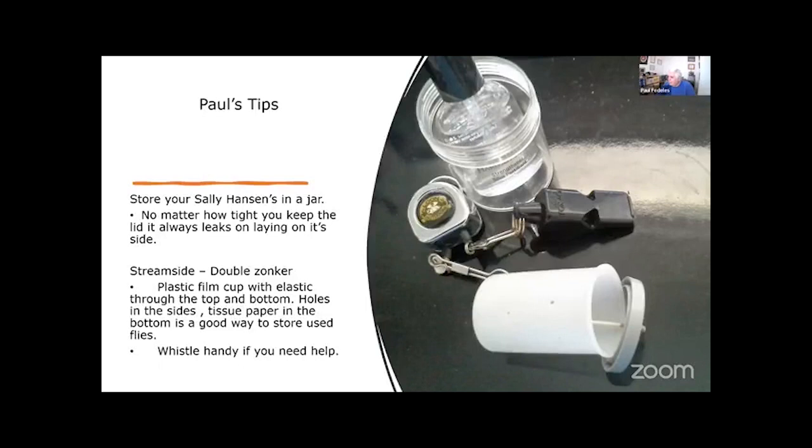My tips, okay? Sally Hansen's – no matter how I do it, if you tighten the leg, it leaks, so I put it in a cup. And the other thing is a double zunker. I got the film caps. You put a piece of elastic between the top and the bottom and put some tissue in it. And then when you take the fly off, you just put it in the bag. And because the cap's got a lid, you don't lose the cap, and it just hangs there. And the whistle is there in case you ever need help. Mainly when you fish in the snowies, you're bush bashing all the time. So if you fall down and you need some help, you're able to get some help.